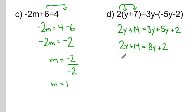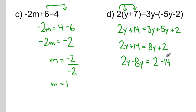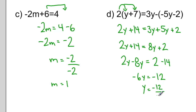This makes it a little bit easier to manipulate. As I bring that 8y term over to the left-hand side, it becomes negative. When I bring the 14 to the right-hand side, it becomes negative. And I end up with negative 6y equals negative 12. My last step is to divide both sides by negative 6, and my final answer is y equals 2.